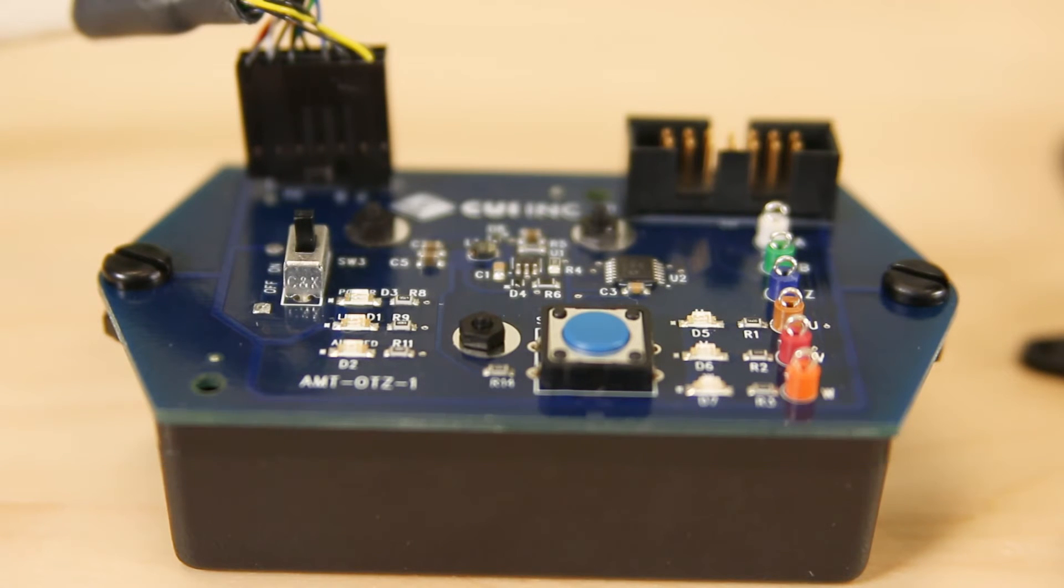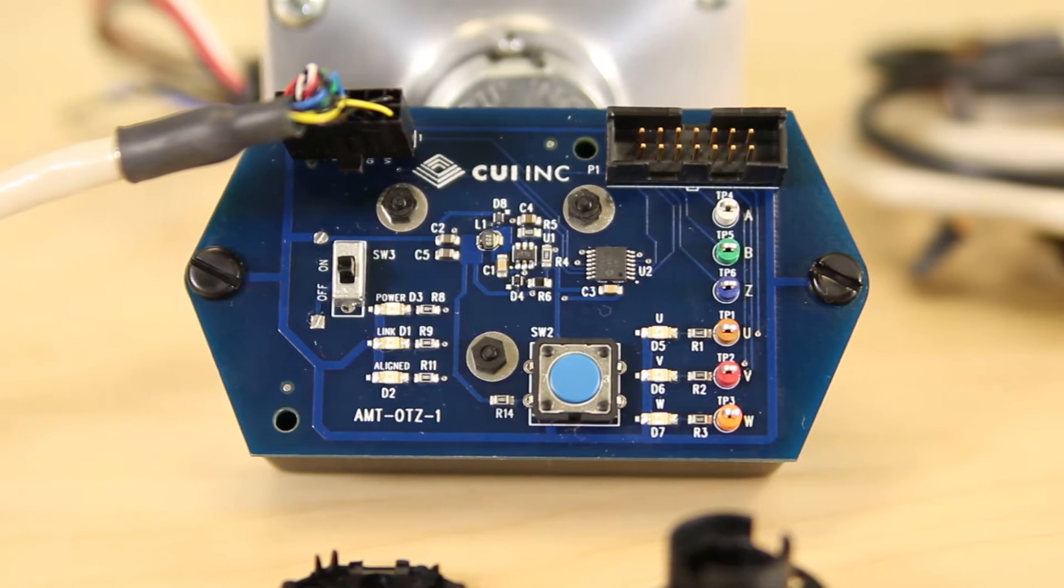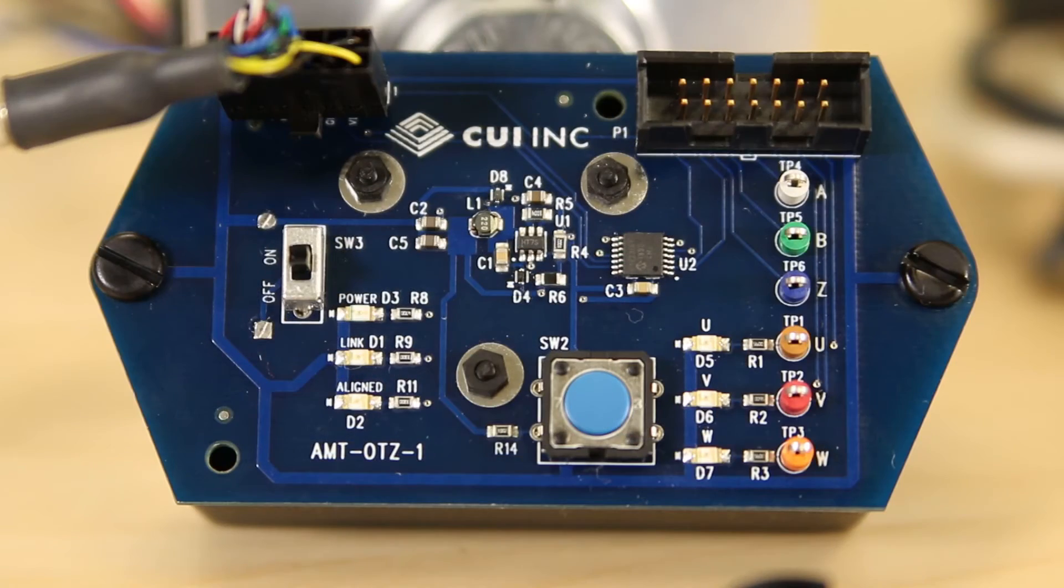Thanks to the digital nature of the encoder design, the AMT31 incorporates a one-touch-zero feature to save significant time during motor installation.